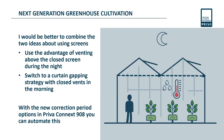It would be better to combine the two ideas about using screens in greenhouses: use the advantage of venting above a closed screen during the night, then switch to a curtain gapping strategy with closed vents in the morning. With the new correction period options in PrivaConnect 908, you can automate this.